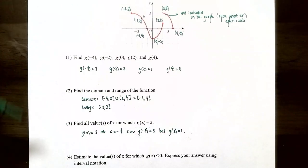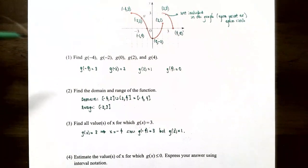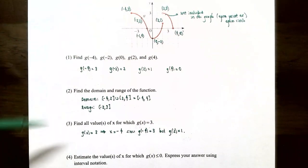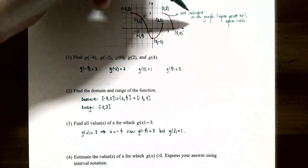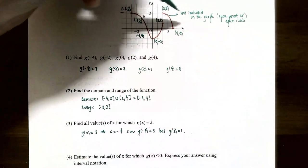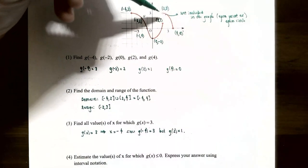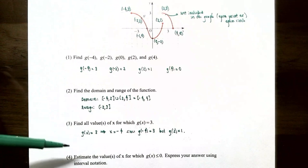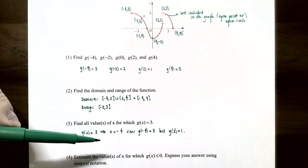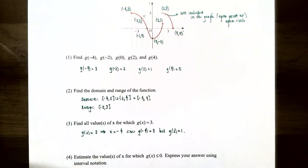Number 3: find all x values for which g(x)=3. Unlike part 1 (given input, find output), here we're given the output y=3 and need to find the input x values. Looking at the graph for where y=3, there's an open circle at one point (excluded) and a filled point when x=−4. So the only solution to g(x)=3 is x=−4.